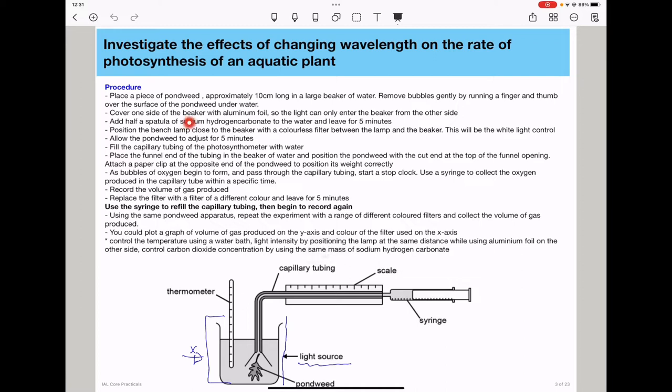Sodium hydrogen carbonate is going to provide a source of carbon dioxide, and for each experiment, we have to use the same mass so that we have the same amount of CO2 that the plant is exposed to. Then we'll position the bench lamp close to the beaker with a colorless filter between the lamp and the beaker. This is the position we're talking about. Between the beaker and the light source, we need to position a light filter, and this is going to provide a specific wavelength.